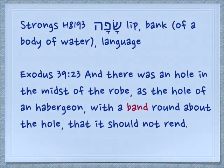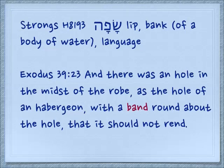One more citation, talking about the high priest's robe — Exodus 39:23: 'And there was a hole in the midst of the robe, as a hole of a habergeon, with a band around the hole, that it should not rend.' So all this concept, whether Sin or Samech, of Saf, is about the edge of something, coming to the end of something, a threshold of something. They're all similar concepts, regardless of the spelling.